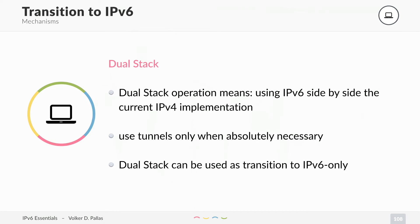Tunnels reduce your MTU size, they limit your communication, and tunnels to the IPv6 internet are nice to try, but you don't want to use them in production. Dual stack can be used as a transition mechanism until you are able to do IPv6 only.